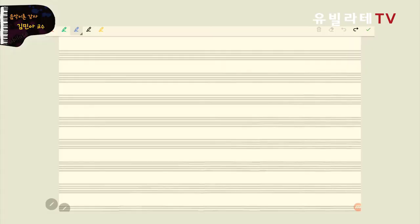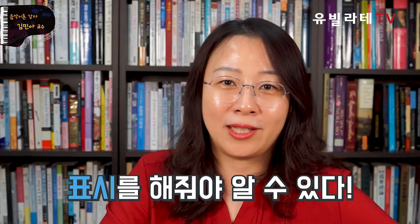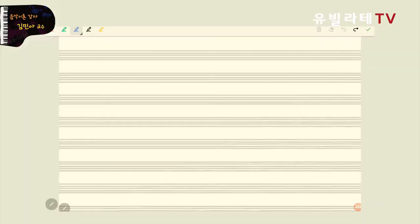악보를 한번 보고 들어가도록 하겠습니다. 오선지가 보일 거예요. 지금 오선지를 보면 아무것도 안 그려져 있는 오선지죠? 오선지에는 여기가 어딘지 표시를 해줘야 높은 음자리표인지 낮은 음자리표인지 알 수가 있다고 말씀을 드렸어요. 그래서 오선지의 아래 두 번째 줄에 점을 딱 찍으시고 높은 음자리표를 그려주시면 되고요. 낮은 음자리표는 위에서부터 두 번째 줄에 점을 딱 그려주시면, 지난주에 말씀드린 것처럼 점을 찍은 자리가 sol(G)의 음이 되고 F의 음이 되어서 높은 음자리표와 낮은 음자리표를 표시하게 되는 겁니다.